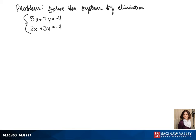Welcome to another day of algebra. Today we'll be solving the system by elimination. Our first equation is 5x plus 7y equals negative 11, and our second equation is 2x plus 3y equals negative 4.